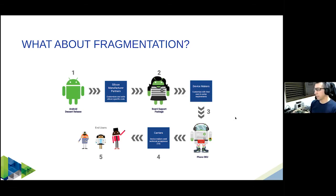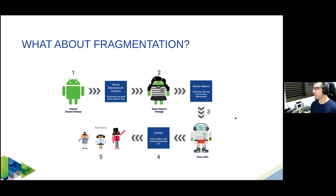Google worries a lot about fragmentation — they want to update Android frequently, but can't easily because from the released source code to the final version reaching users, many changes are made by silicon providers. To address this, Google created projects like Project Treble and Project Mainline. Sometimes the architecture of the operating system is a bit complex because it's trying to solve these complex fragmentation problems.